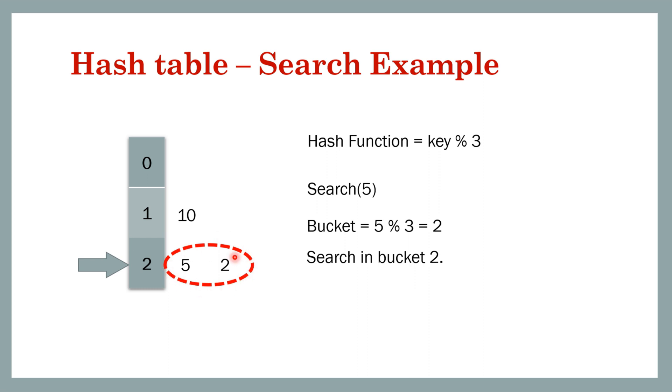This is the bucket id, this is not the data. The data is 5 and 2 and we will go ahead and search. There can be different ways how you will design your search algorithm. You will search within that subset of data within that bucket itself.